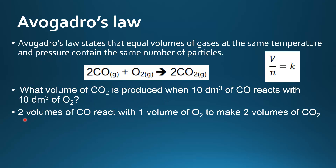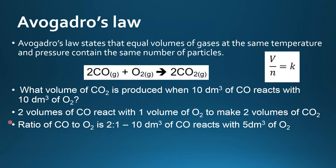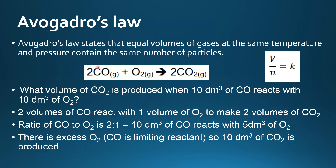Because we're dealing with gases, we can say that two volumes of carbon monoxide react with one volume of oxygen to make two volumes of carbon dioxide. The ratio of carbon monoxide to oxygen is two to one, so 10 decimetres cubed of carbon monoxide will react with five decimetres cubed of oxygen. After all the carbon monoxide has reacted, we'll have five decimetres cubed of oxygen left over, so there is excess oxygen. That means carbon monoxide is the limiting reactant.